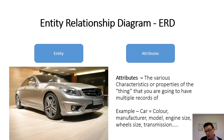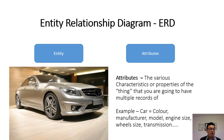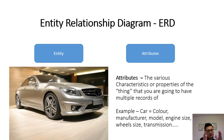Or it could be one manufacturer but multiple models, or multiple manufacturers and multiple models. It could be engine size, wheel size, or transmission. So the entity is the thing, and the attributes are the characteristics of that thing. That makes up entities — your table of information — and the attributes are your fields within the table.